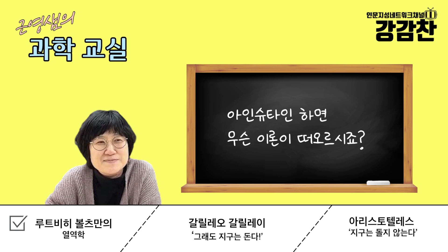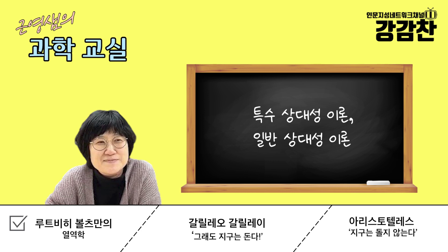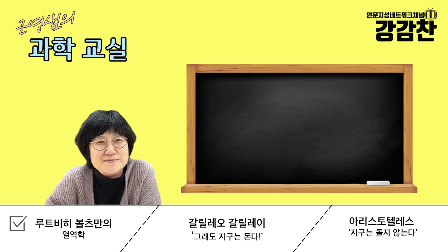아인슈타인 하면 상대성이론이 떠오르죠. 특수상대성이론, 일반상대성이론. 원래 논문 제목은 '움직이는 전도체의 전기동력학에 관하여'입니다. 중요한 건 '움직이는'과 '동력학'이라는 점인데, 이 파트에서 누가 나오냐면 볼츠만이라고 하는 사람이 나옵니다.